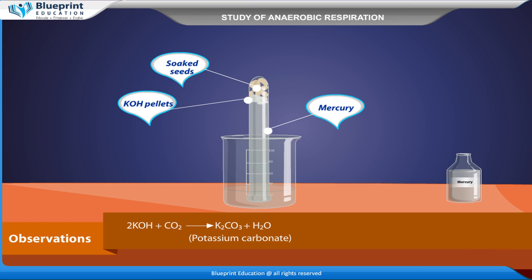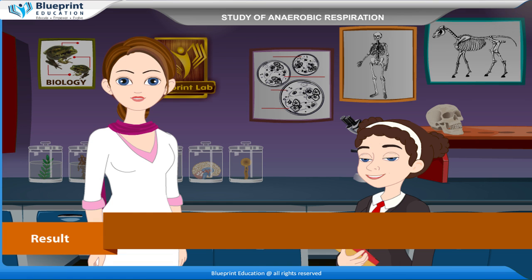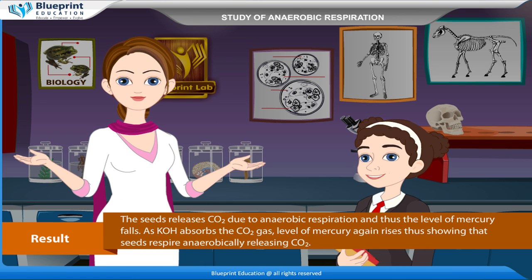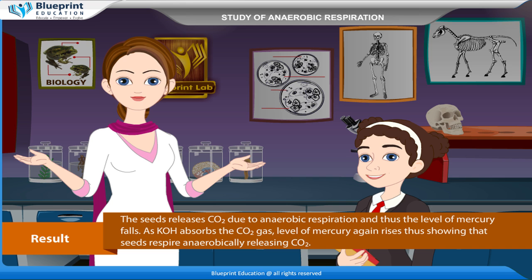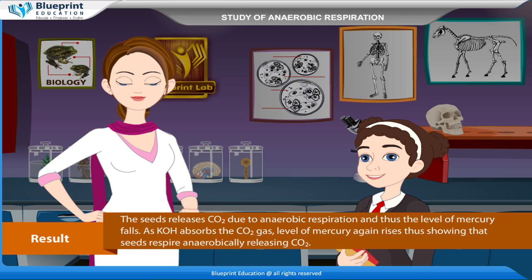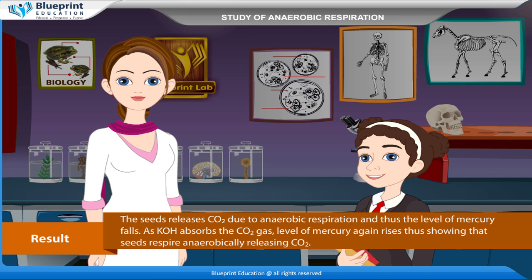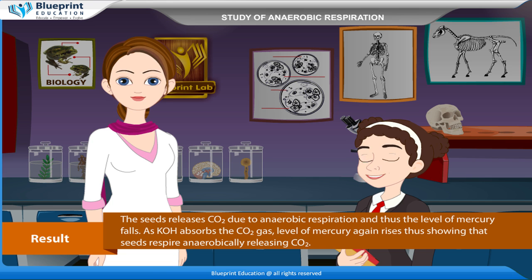2KOH + CO2 gives K2CO3 + H2O (potassium carbonate). Result: The seed releases CO2 due to anaerobic respiration and thus the level of mercury falls.